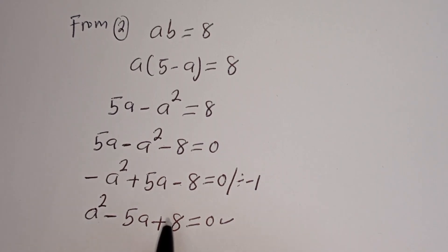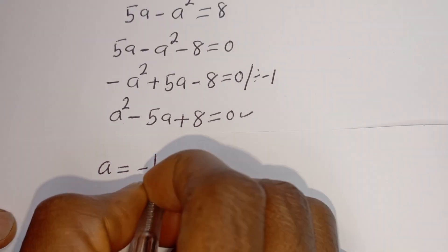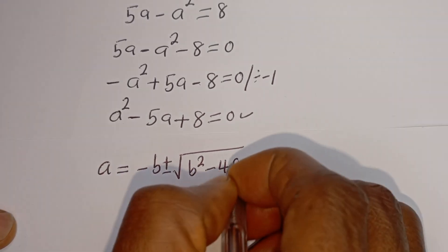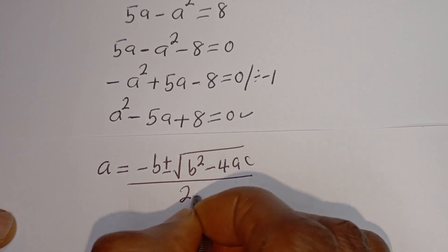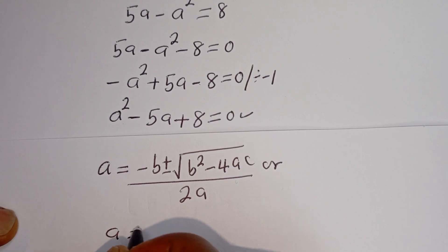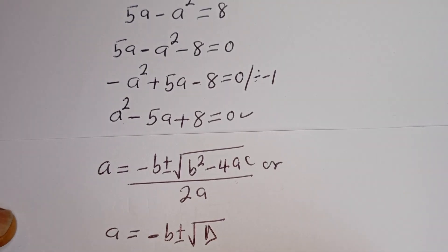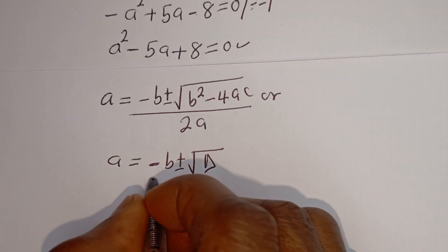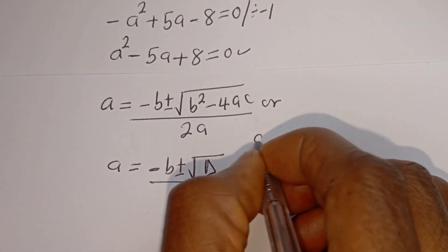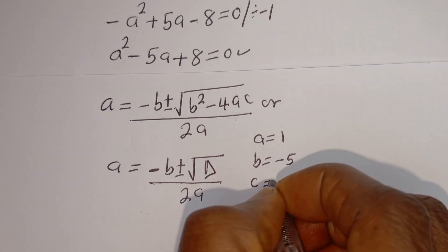This is a quadratic equation. Let's solve this using the quadratic general formula. The quadratic formula is given as x equals minus B plus or minus square root of B squared minus 4AC, all over 2A. From this quadratic equation, A equals 1, B equals minus 5, C equals 8.